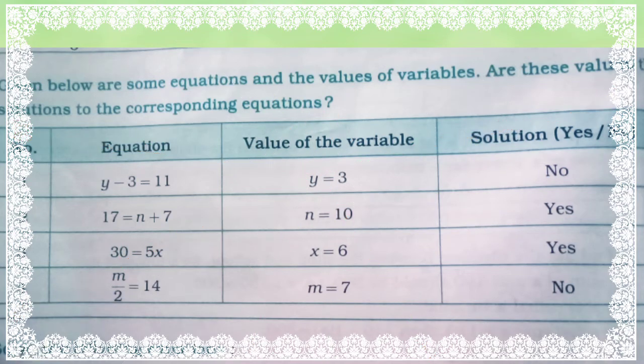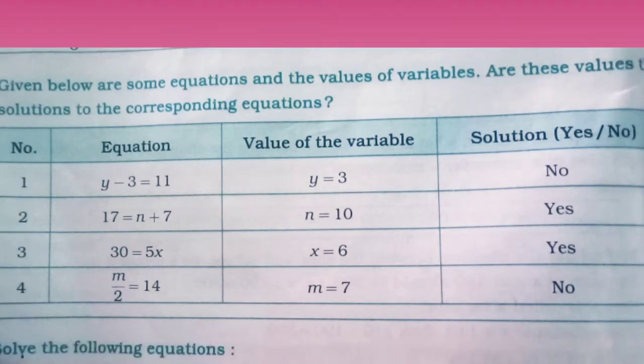The fourth one is m upon 2 is equal to 14. We will multiply both sides by 2, so the answer is m is equal to 28. But the answer given is m is equal to 7. So the answer is no. Here m is equal to 28, so we write no.